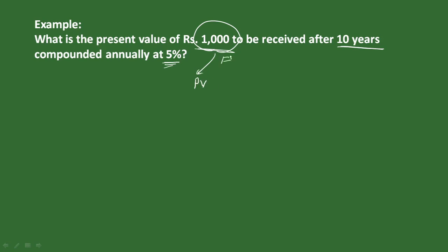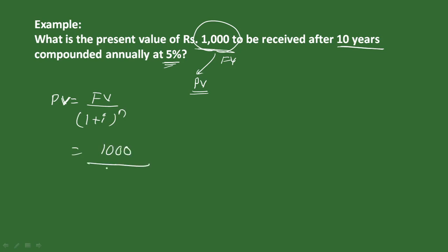To use the formula: present value is equal to future value divided by (1 plus i) to the power n. Here the future value is 1,000 rupees. Interest i is 5%, so i equals 0.05. The period n is 10 years.